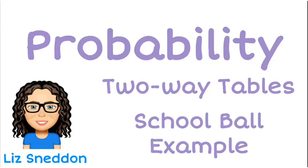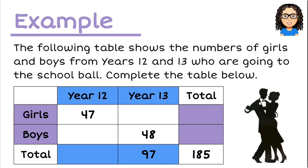Hi, I'm Liz Nedden. Today we're going to have a look at an example from probability in the two-way tables, and this is an example about the school ball. Here's our example — we've got a table that shows the number of girls and boys from Year 12 and 13 who are going to the school ball.